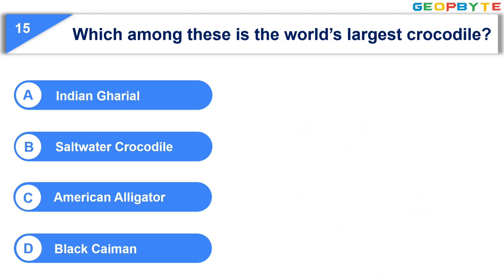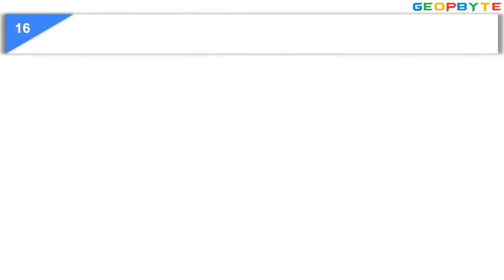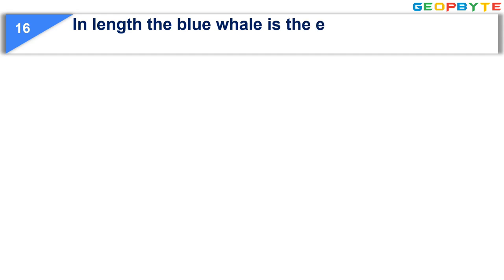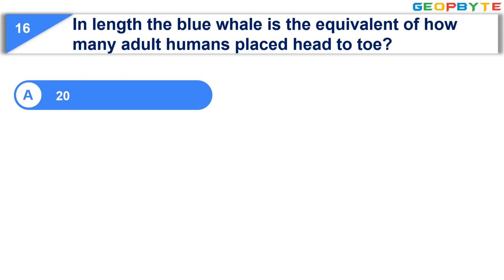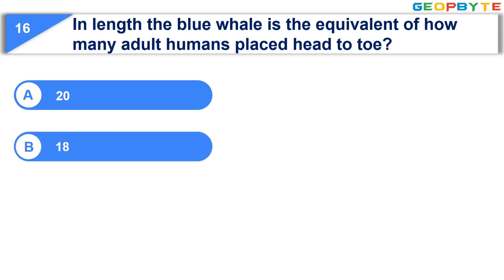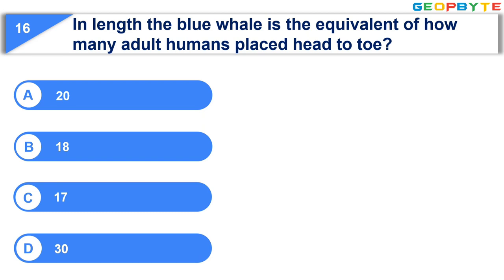Your time is up and the correct answer is Option B: Saltwater crocodile. The sixteenth question is: In length, the blue whale is the equivalent of how many adult humans placed head-to-toe? Option A: 20. Option B: 18. Option C: 17. Option D: 30. Your time starts now.